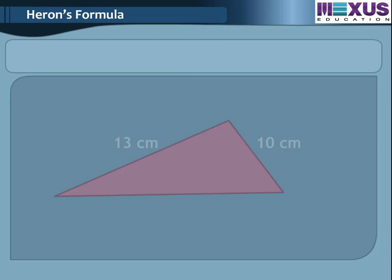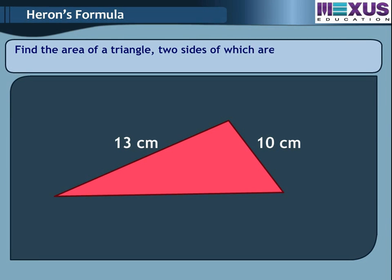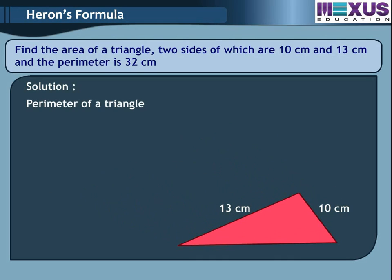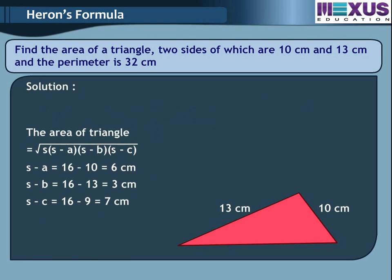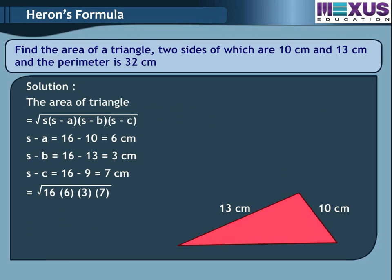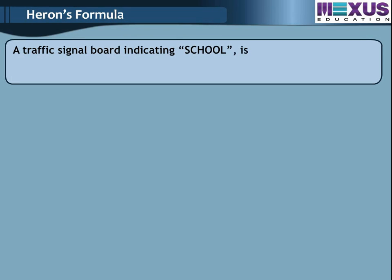Let us solve some more examples. Find the area of a triangle, two sides of which are 10 cm and 13 cm, and the perimeter is 32 cm. Solution: perimeter equals 32 cm, A equals 10 cm, B equals 13 cm. Therefore C equals 32 minus (10 plus 13) equals 32 minus 23 equals 9 cm. Also 2S equals 32 cm, so S equals 16 cm. Area of triangle equals square root of 16 into 6 into 3 into 7 equals 12 root 14 cm square.